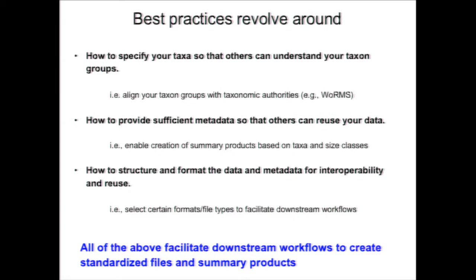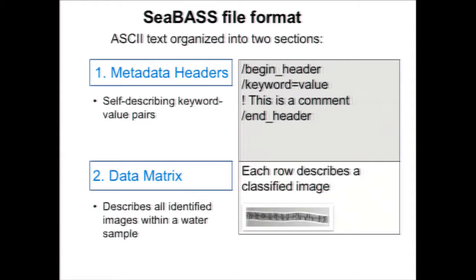The best practices we recommend will be to determine how we specify our taxa using a reference like WoRMS — the World Register of Marine Species — which is a repository that has taxonomic IDs for all organisms, each with a unique ID number. We're thinking about implementing something like that to have traceability of taxonomic IDs. We also need to provide sufficient metadata including instrument information, data processing details, location, station ID, geolocation, and time, and structure the data file format so it can be passed through other workflows.